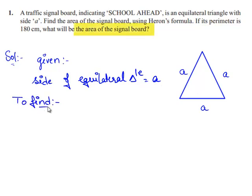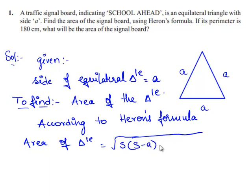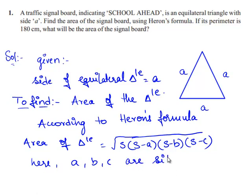We need to find the area of the triangle. According to Heron's formula, the area of the triangle is equal to the square root of S times (S minus A) times (S minus B) times (S minus C), where A, B, C are the sides of the triangle, and S is the semi-perimeter, that is (A plus B plus C) divided by 2.